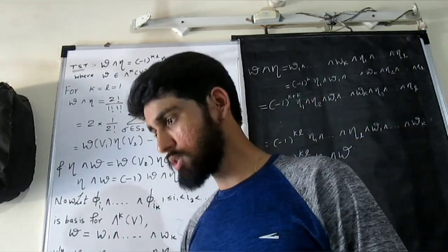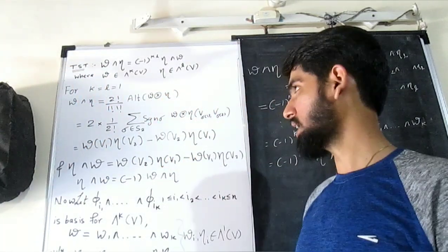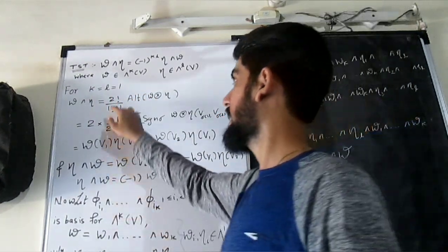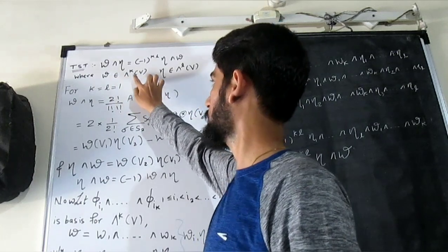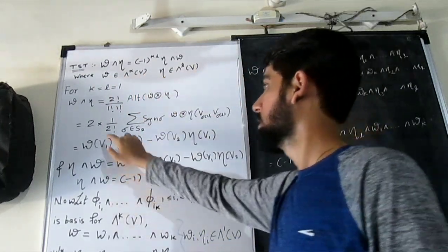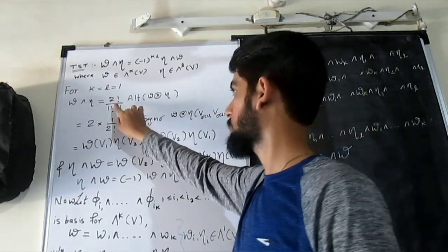So we will prove this result for arbitrary value of k and l, but we start with when k and l is 1. When k and l is 1, we have omega is an element of one form of V and eta is the same. So if you see the wedge product of omega and eta, by the definition of wedge product, since the wedge product will be going to be in the second form on V.